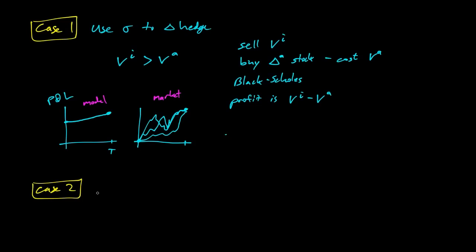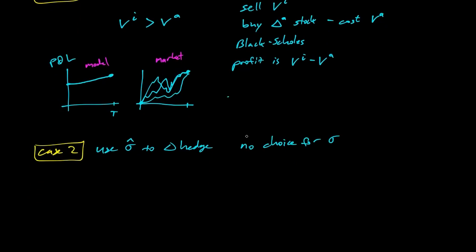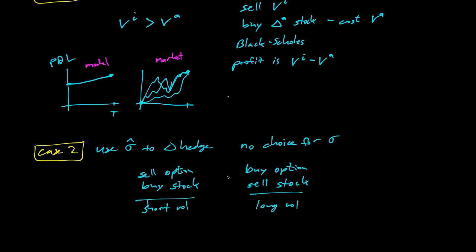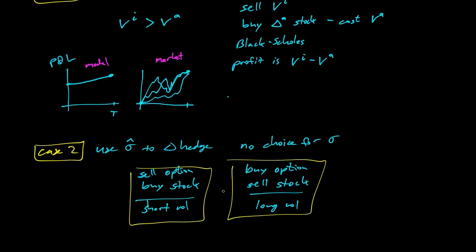Case two: what if we hedge using σ̂, the implied volatility? At every time step we use implied volatility to hedge. There's no choice for sigma — our only choice is between selling the option and buying the stock (short volatility) or buying the option and selling the stock (long volatility). If we sell the option, we think volatility is high now and we're making money by selling. If we buy the option, we think volatility is cheap and will increase.